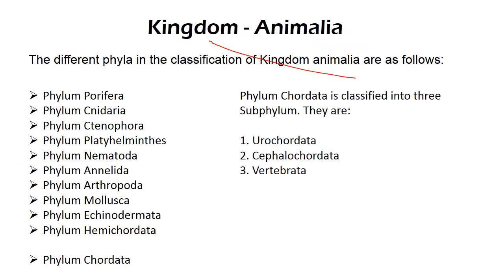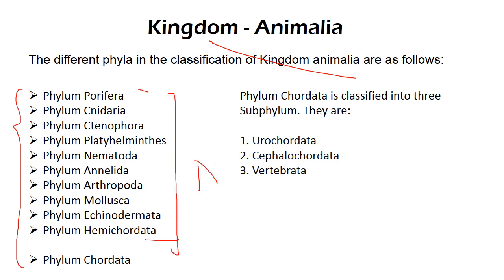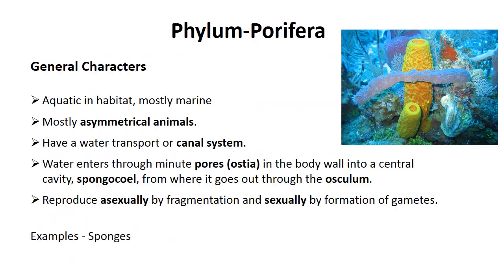Now, the classification of phyla in kingdom Animalia. Based on different key characters, we classify the different phyla in kingdom Animalia. It starts from Porifera to Chordata. Today we'll talk about from Porifera to Hemichordata because they belong to non-chordata — they don't have a notochord. Chordata will be covered in part two. Chordata is also divided into three subphyla: Urochordata, Cephalochordata, and Vertebrata.